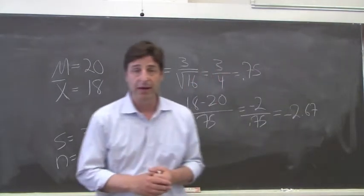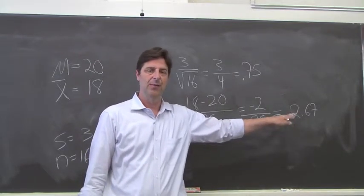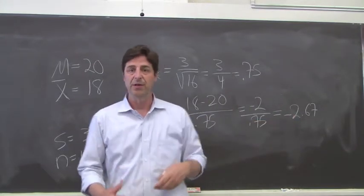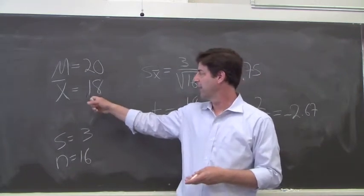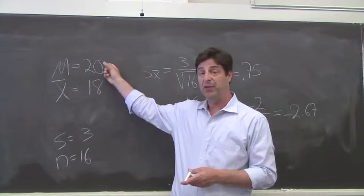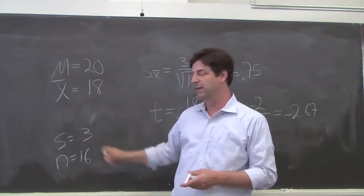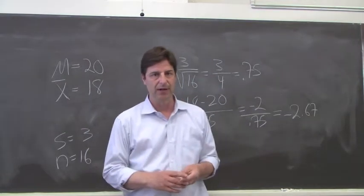Now we're going to have to use Appendix B to figure out what's the probability of getting that t-value by chance. In other words, what's the probability of randomly selecting a sample that has a mean of 18 when the population mean is 20 and the sample size is 16 and the standard deviation is 3.